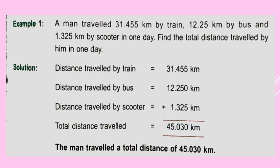First write distance travelled by train, that equals 31.455 km. Then distance travelled by bus equals 12.250 km. Then write distance travelled by scooter, that is equal to 1.325 km. While writing these decimal numbers, be careful that decimal places should be one below the other. Then to calculate the total distance travelled, we have to add all these three numbers. The addition of decimals is the same as adding whole numbers and natural numbers, so go on adding like this.